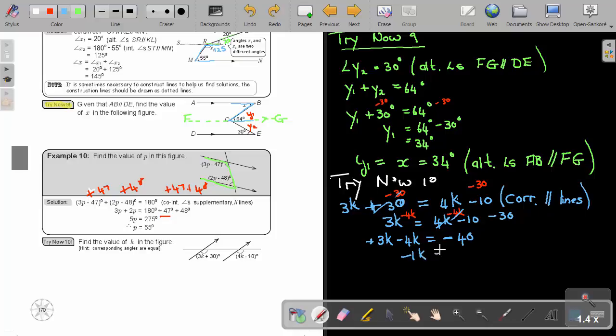To get this positive, I divide with the coefficient, which is negative 1, and I will get my value of K, which is 40 degrees. Just for verification, let's test it. If you say 3 times 40 plus 30, this is 120 plus 30, it will be 150. And let's do it here. 4 times 40 is 160 minus 10. And it will also be equal to 150 degrees.